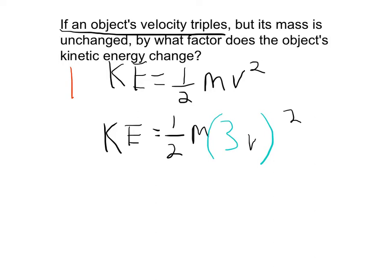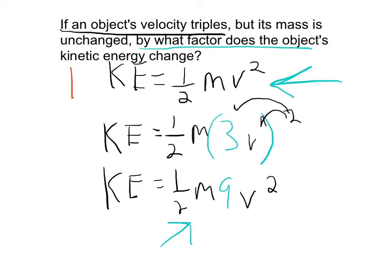We can go ahead and find the number here because this squared applies to both things inside. And so that equation becomes kinetic energy equals 1/2 m times 9v squared. And it should be obvious to you that in order to get this, we had to multiply the original equation by 9. So the answer to the question, by what factor does the object's kinetic energy change? It changes by a factor of 9. So the kinetic energy got 9 times bigger is what that means.